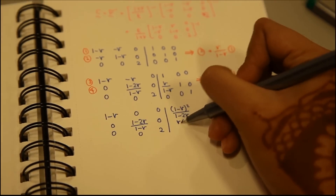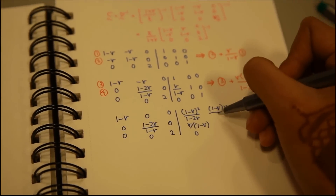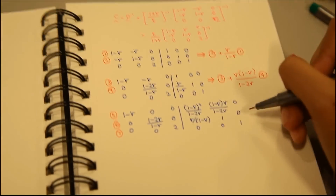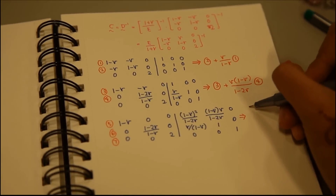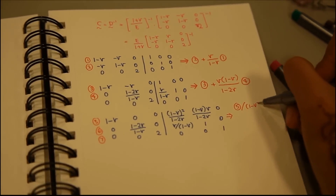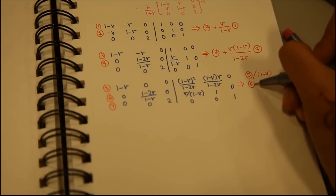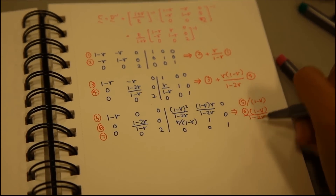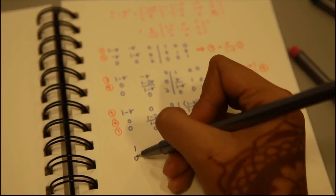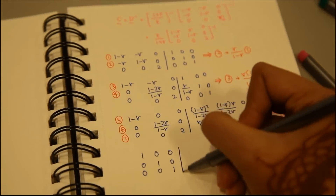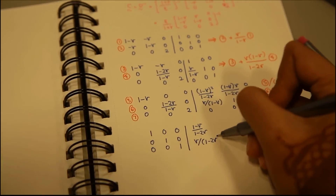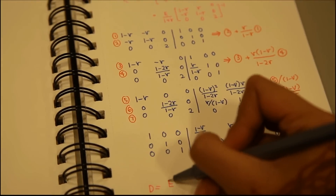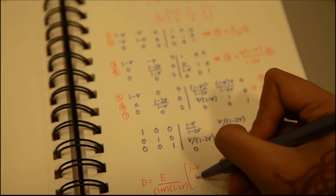In the final step to find the elasticity tensor matrix, we divide the first row by (1 minus mu), multiply the second row by (1 minus mu) divided by (1 minus 2 mu), and divide the last row by 2. This yields a unit matrix on the left-hand side and the elasticity tensor matrix on the right-hand side.